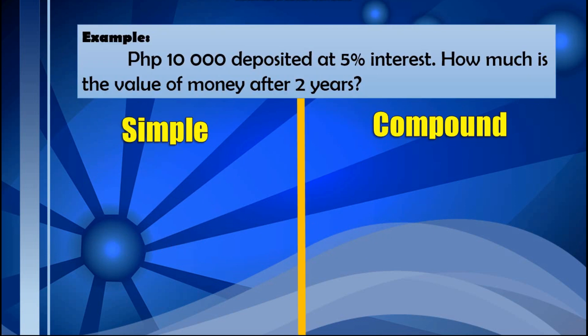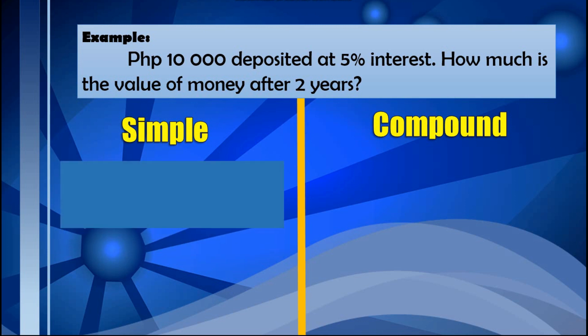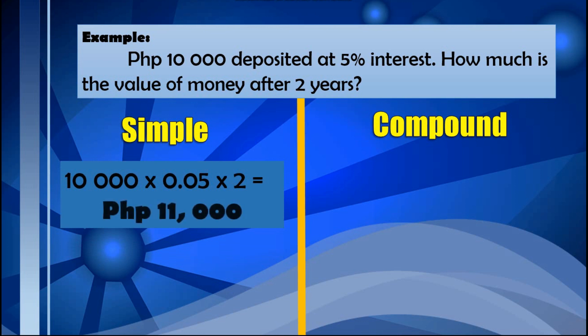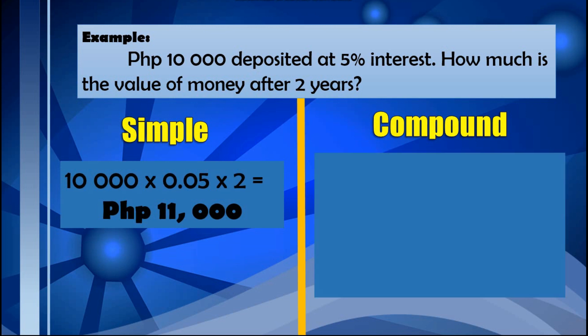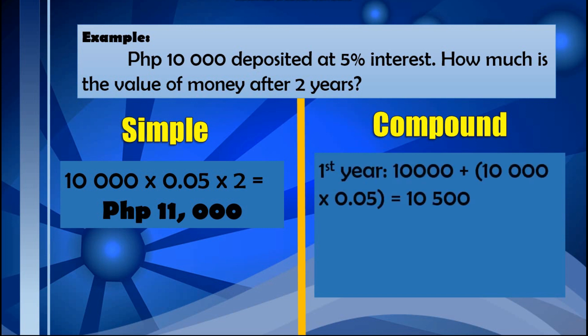Let us show the difference between simple interest and compound interest. If the interest given is only simple, to compute for the money after 2 years, it is given by 10,000 times 0.05 times 2, which gives us 11,000. Meaning to say, there is 1,000 pesos interest after 2 years. For compound interest, since interest also earns interest, we present this per year. During the first year, the principal is 10,000, and the interest is 10,000 times 0.05, which gives 500. So the total for the first year is 10,500.